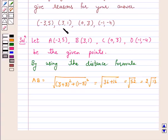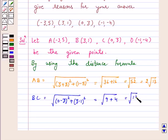Distance BC is equal to square root of (0-3)² + (3-1)² which is equal to 9 + 4. This is equal to square root of 13.